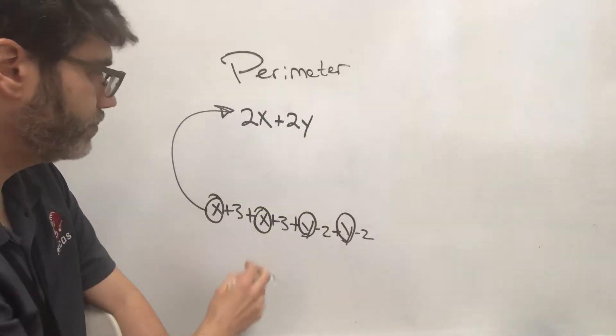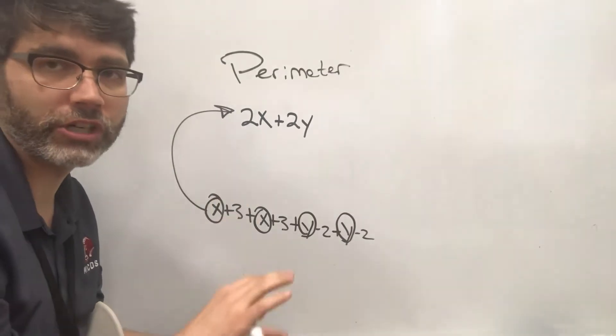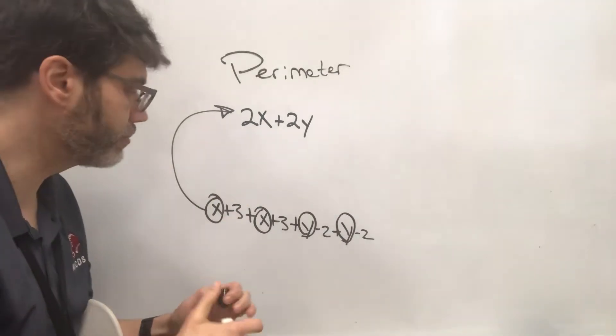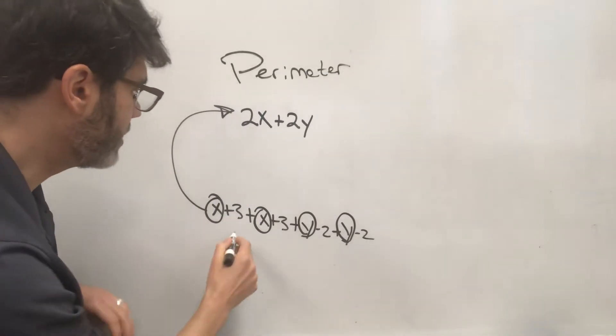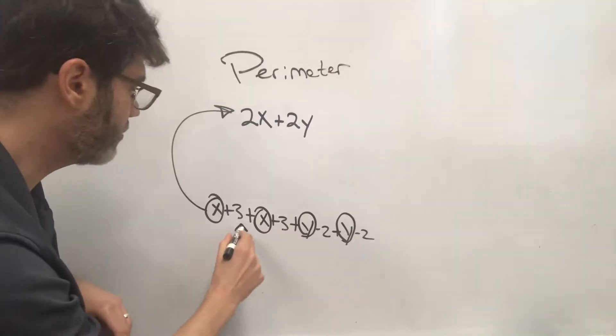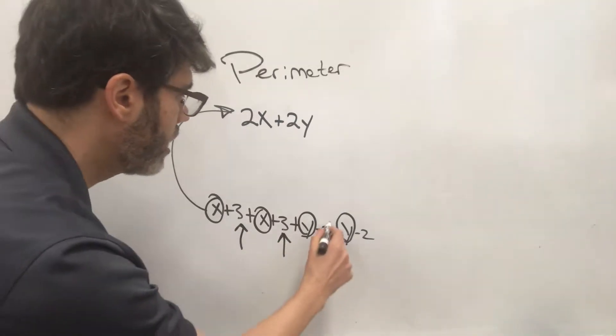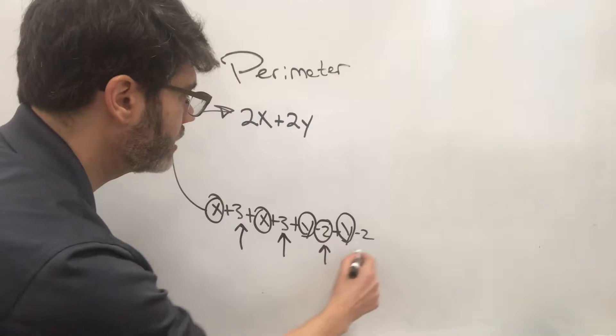We can gather up our constants, which are just our numbers that don't have any variables attached to them. Looks like we have a positive 3 here, a positive 3 here, a negative 2 here, and a negative 2 here.